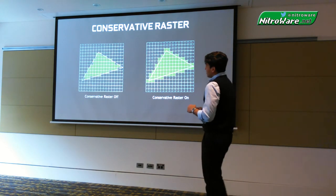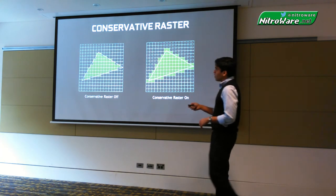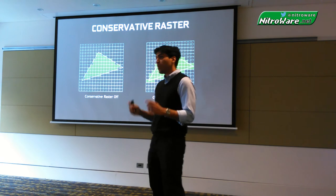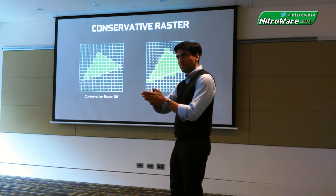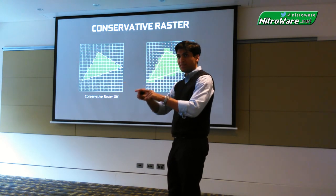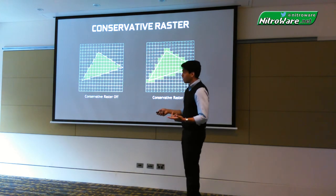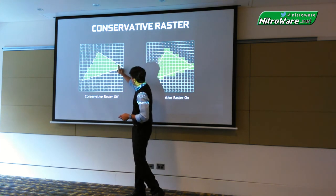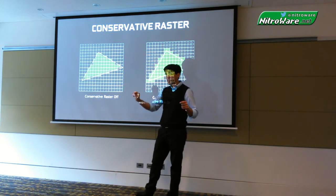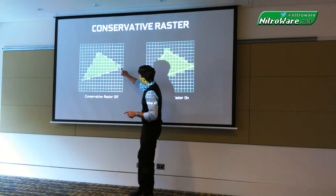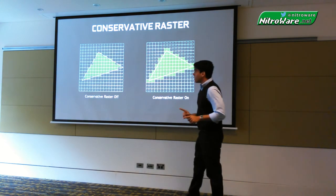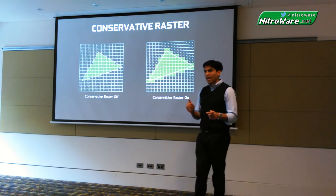Let's look at one more example: conservative raster. Assume that this geometry here, the triangle, is some object in the game, and we want to simulate the shadow of that object by tracing it with rays. Before DX12_1, consider these squares as pixels on the screen. If the majority area of a pixel was inside the object, that pixel was considered to be inside the object from a shadow-tracing perspective. But if the majority part of the pixel was outside the triangle, it was excluded. The problem with that is it creates holes in the shadow.